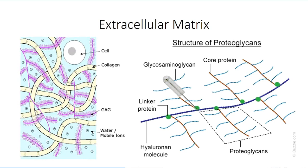In turn, these proteoglycan units are anchored at their base to hyaluronic acid, which is an additional long-chain glycosaminoglycan, through linker glycoproteins such as chondronectin. This is what gives cartilage its physical properties. Electrostatic interactions between collagen and the proteoglycans provide a good balance between strength and flexibility, and the hygroscopic nature of the sugar moieties draws water into the matrix like a sponge. This is what gives cartilage its gel-like properties.